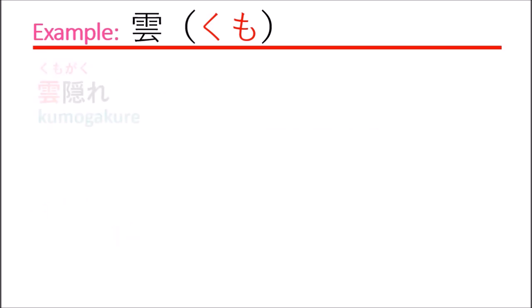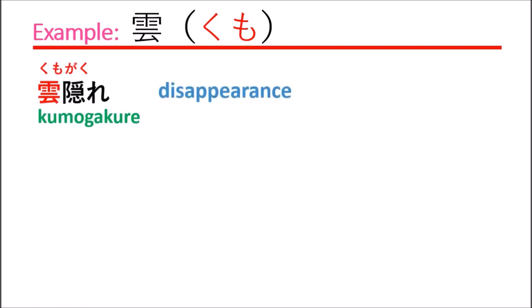The next example is kumo kakure, which means disappearance — it means there are so many clouds that you cannot see the sun. This is expressed as kumogakure.